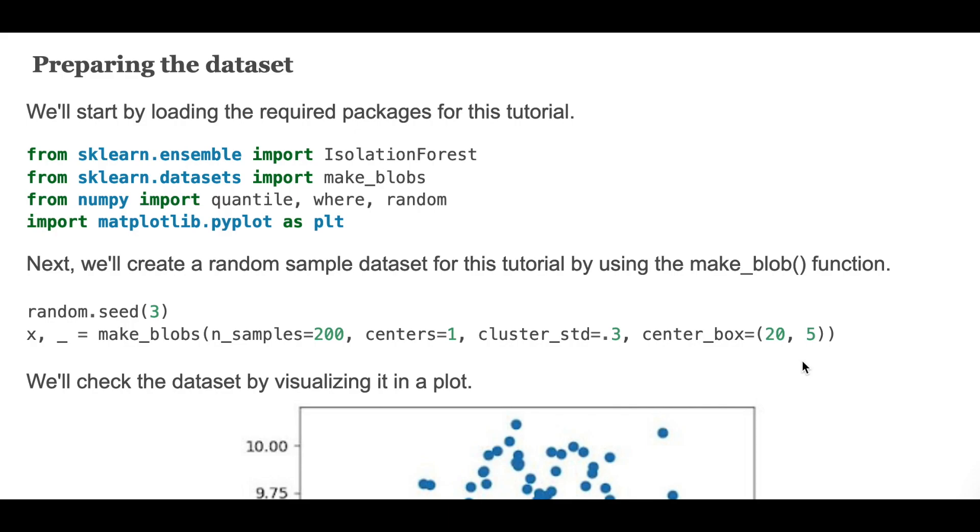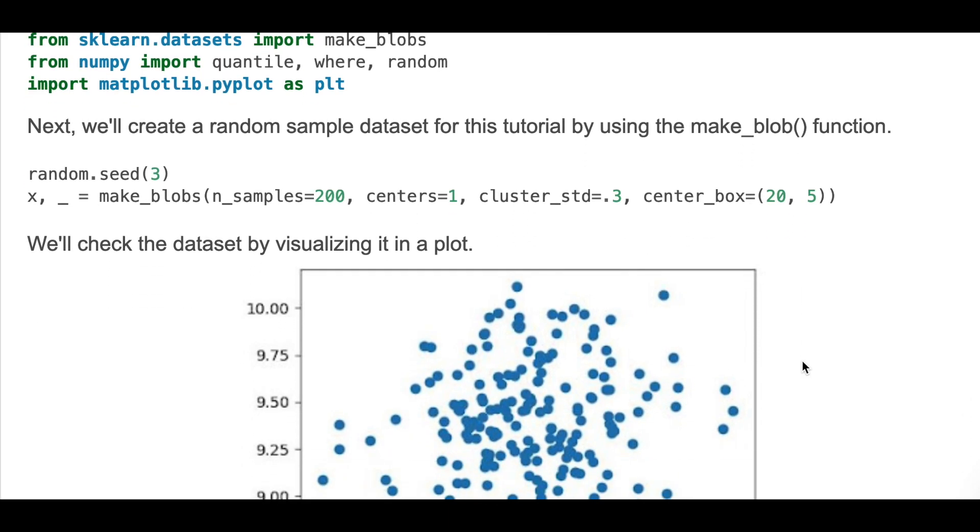First we'll create a random sample dataset for this tutorial by using the make_blobs function as shown here, and we visualize it in a graph. This is the data to test.